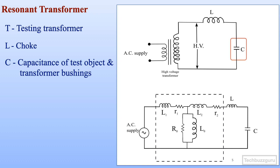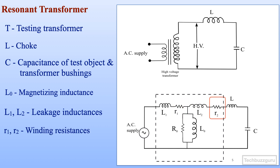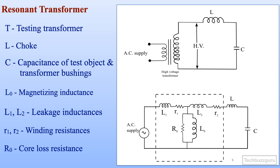In the equivalent circuit, the standard transformer elements are present: the magnetizing inductance L0, winding leakage inductances L1 and L2, winding resistances R1 and R2, and the core loss resistance. The transformer, along with the external variable inductor or choke, is connected in series with the capacitance. This is a typical series resonant circuit arrangement shown here for understanding the resonant transformer operation.